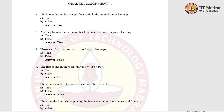The first question is: the human brain plays a significant role in the acquisition of language. Option A, true. Option B, false. The right answer is option A, true. Because the language that we hear in the form of input goes to the brain. The brain processes it and then gives it back as output, and this output is the language that we speak.